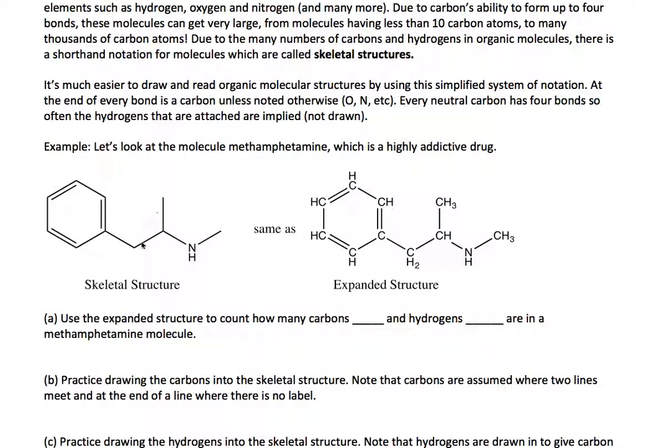Here's an example of methamphetamine, for example. Here, we've got a six-membered ring with a chain that has a nitrogen, and there's all these hydrogens in there that are not shown. This is what we call a skeletal structure. It's how chemists communicate with each other normally.